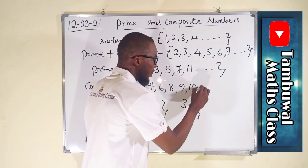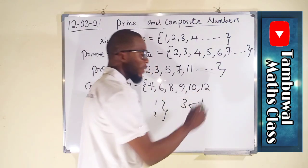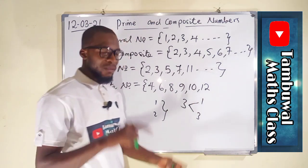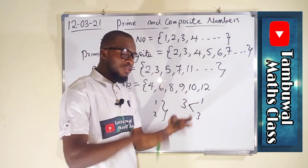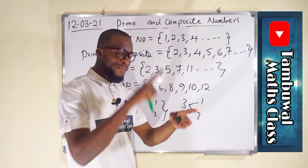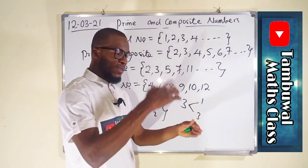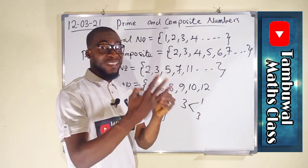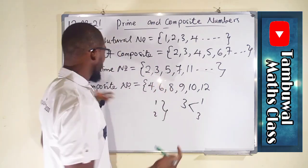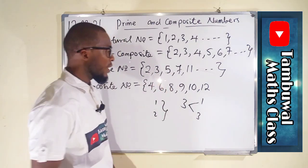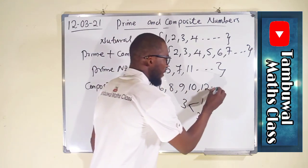Moving on, we have twelve. Twelve has one, two, three, four, six, and twelve — six factors. So it is a composite number in that order.